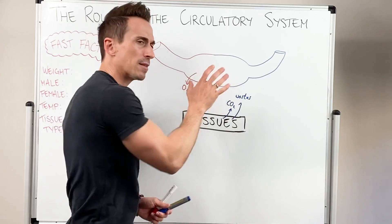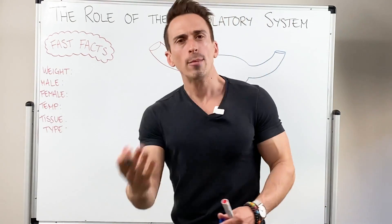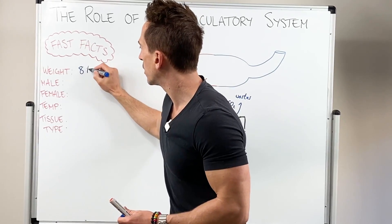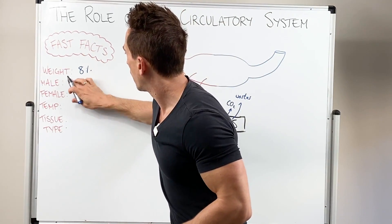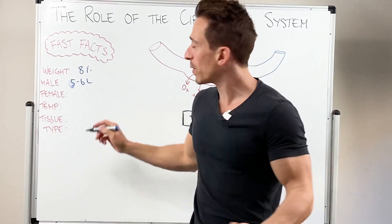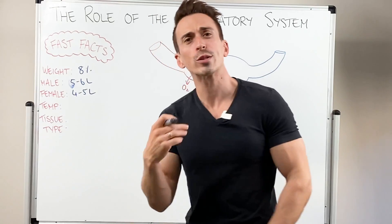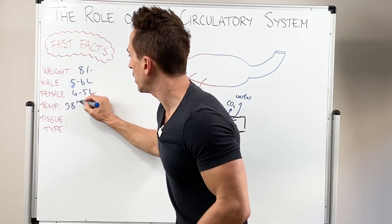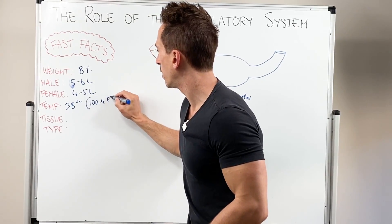Now let's have a look at blood and some fast facts about the blood within your circulatory system. How much does it weigh? Well it weighs around about 8% of your body weight. So if you are male this is around about 5-6 litres, and if you are female this is around about 4-5 litres. The temperature of the blood is about 38 degrees, which is around about 100.4 Fahrenheit.